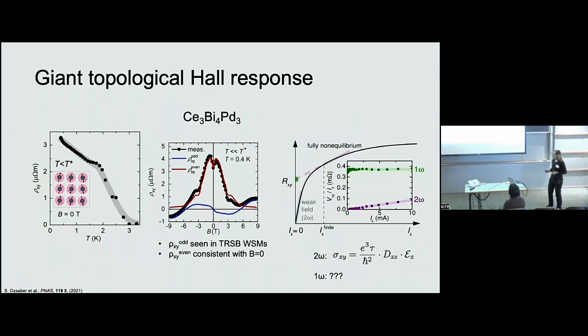This is a non-centrosymmetric, non-symmorphic system which at zero applied magnetic fields with no magnetism, no time reversal symmetry breaking exhibits a large Hall response as the temperature is lowered below the kind of coherence temperature where all the itinerant electrons in the system screen the local f-moments.